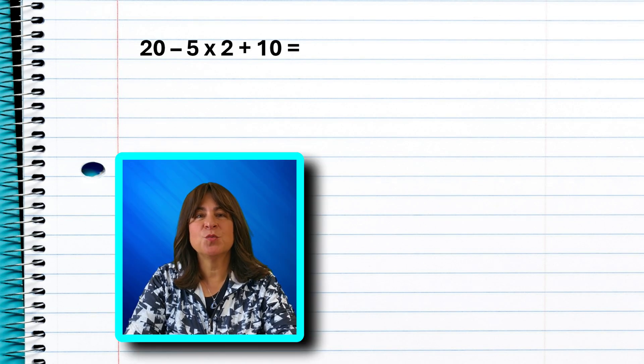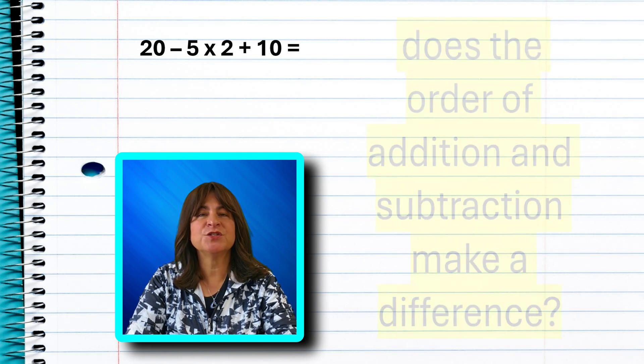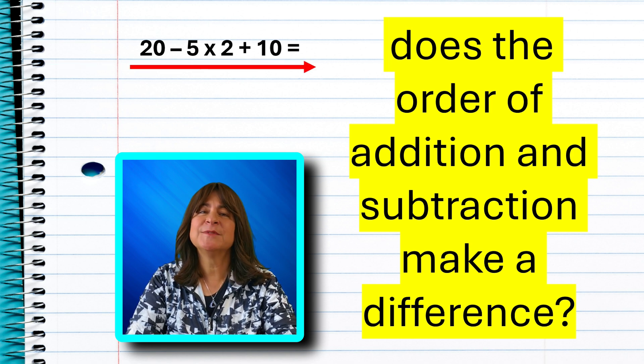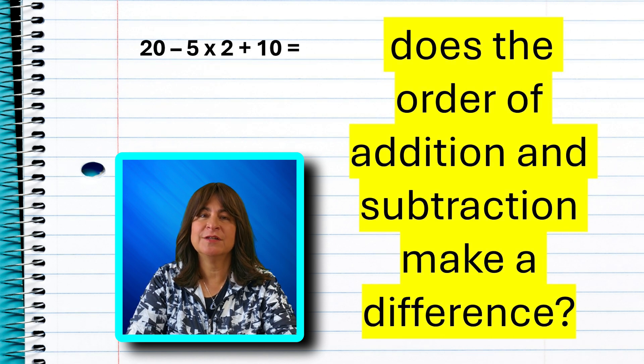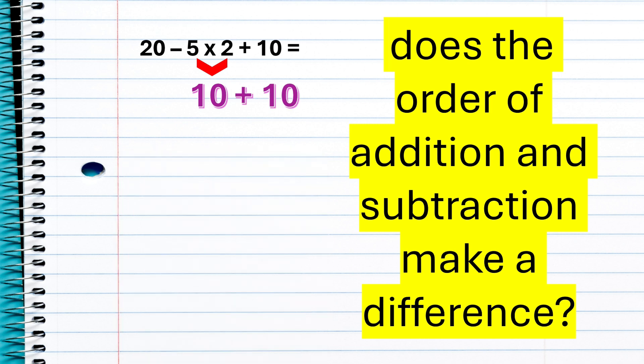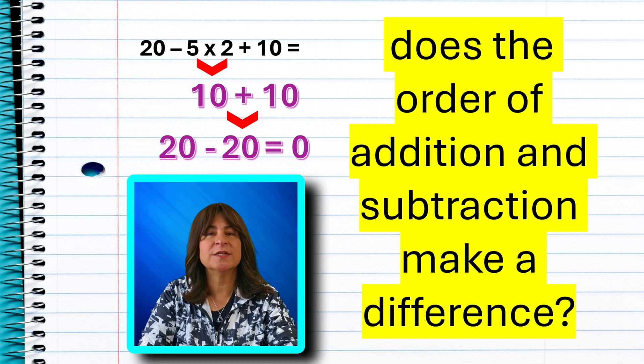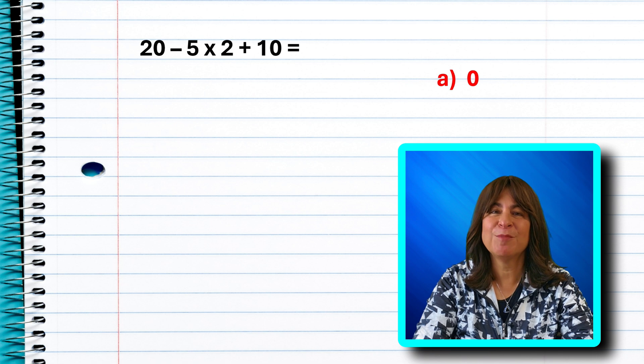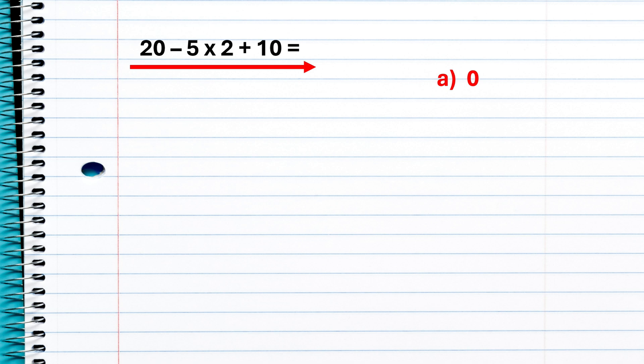Okay, let's look at the second problem. 20 minus 5 times 2 plus 10. Does the order of addition and subtraction make any difference? And again, yes, it does. You must solve this reading from left to right. Let's see what happens if we don't follow that rule for addition and subtraction. 5 times 2 is 10. And then let's do addition first for kicks. So 10 plus 10 is 20. And then 20 minus 20 is 0. So if we do addition before subtraction, we get 0.